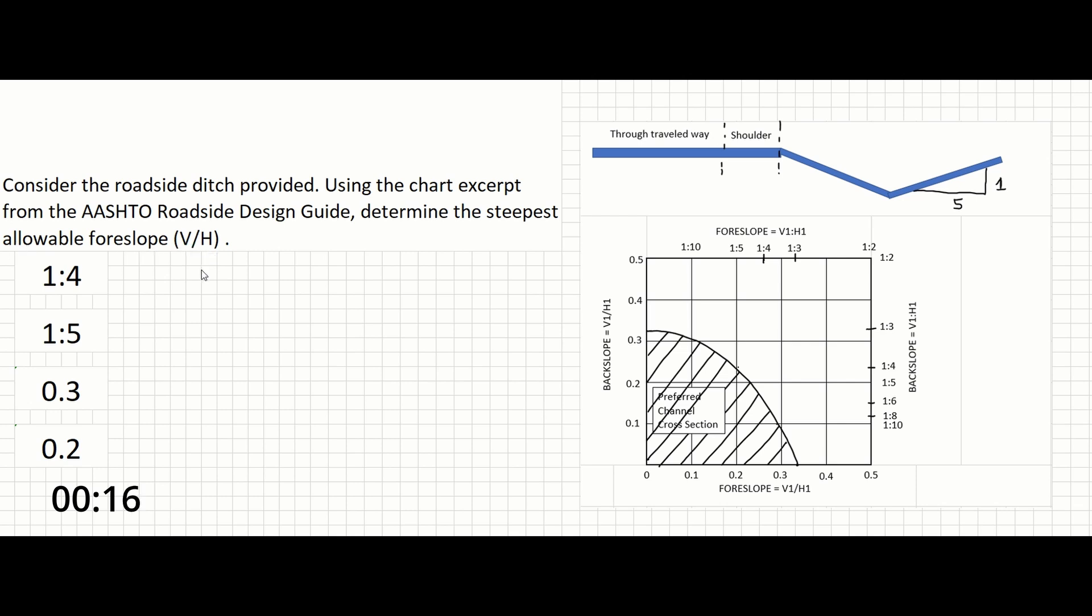So in this problem, all we need to do is use the AASHTO chart provided to correctly identify the steepest allowable foreslope in units of vertical slash horizontal.